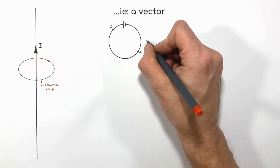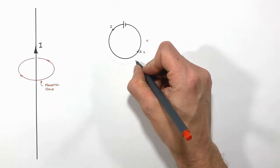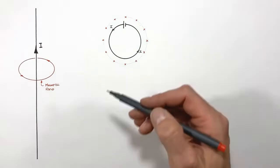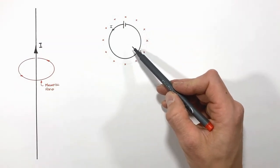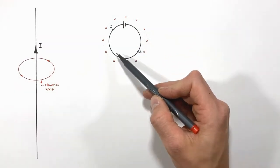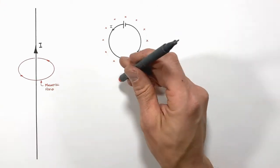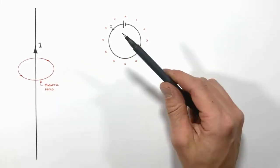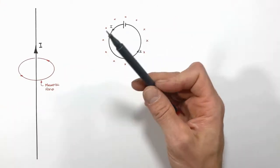Inside this loop of current-carrying wire, we would see a magnetic field that is always coming out of the page. Again, imagine an arrow shot from above towards you. You would see the front of the arrow or the point of the arrow.